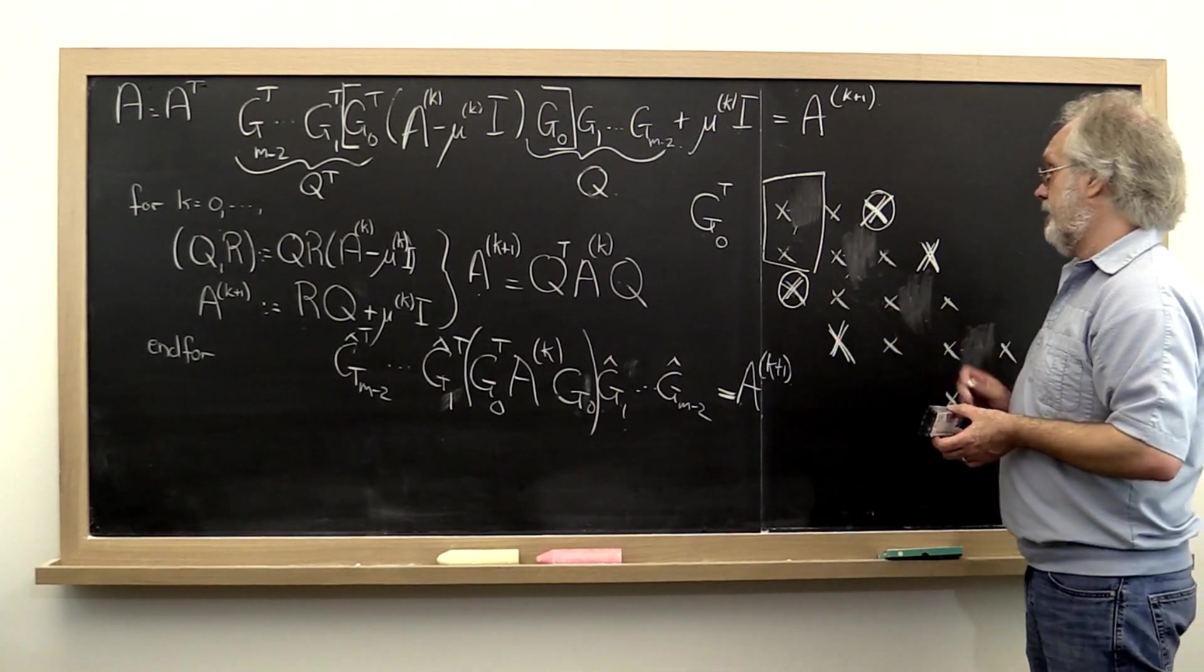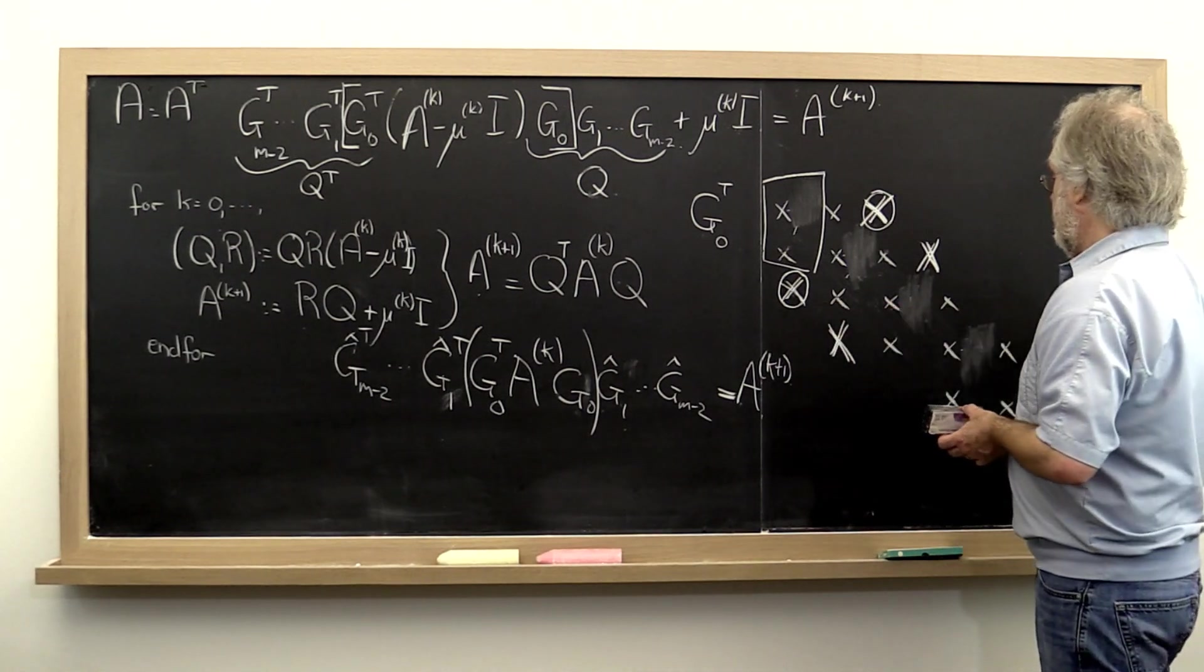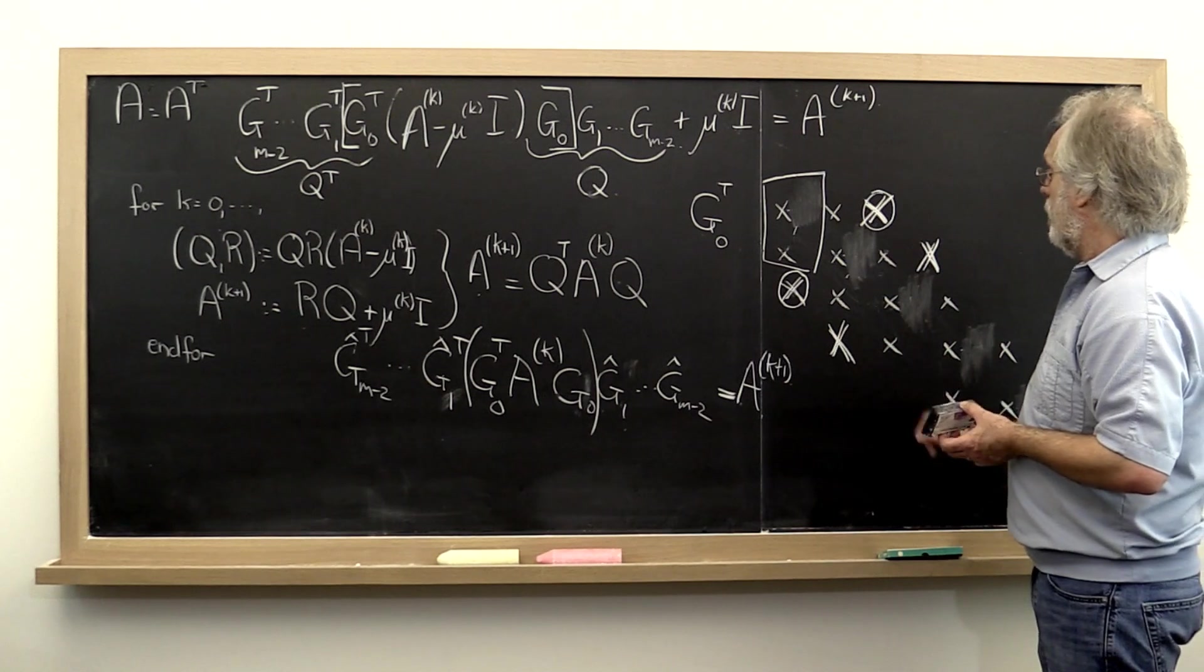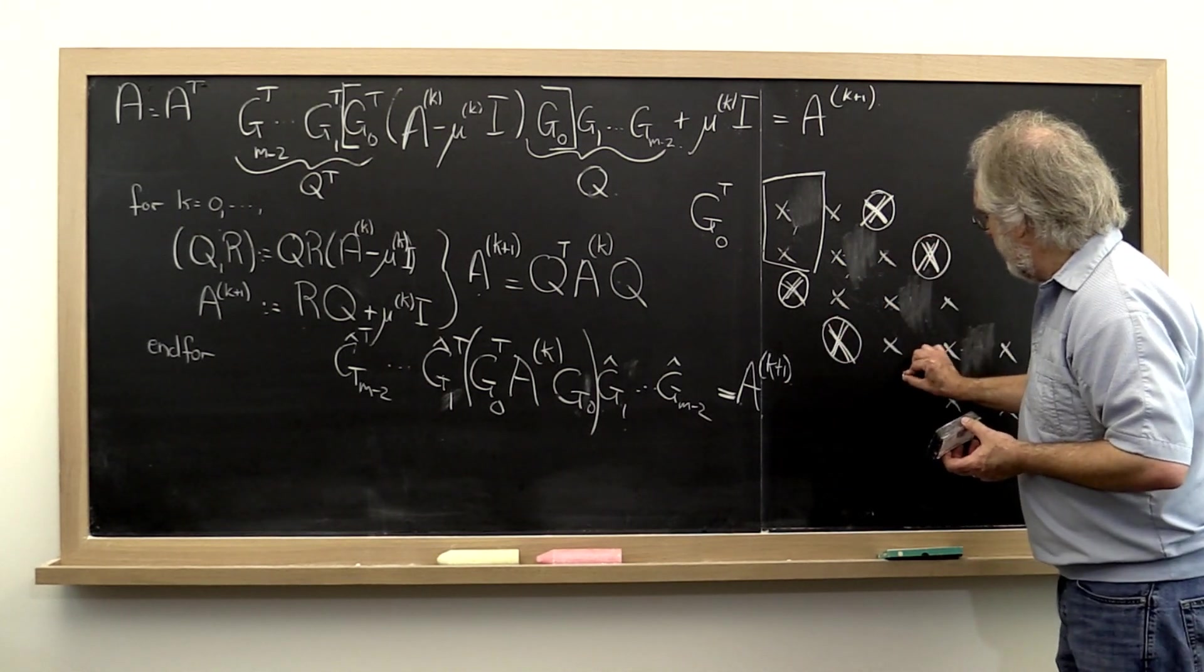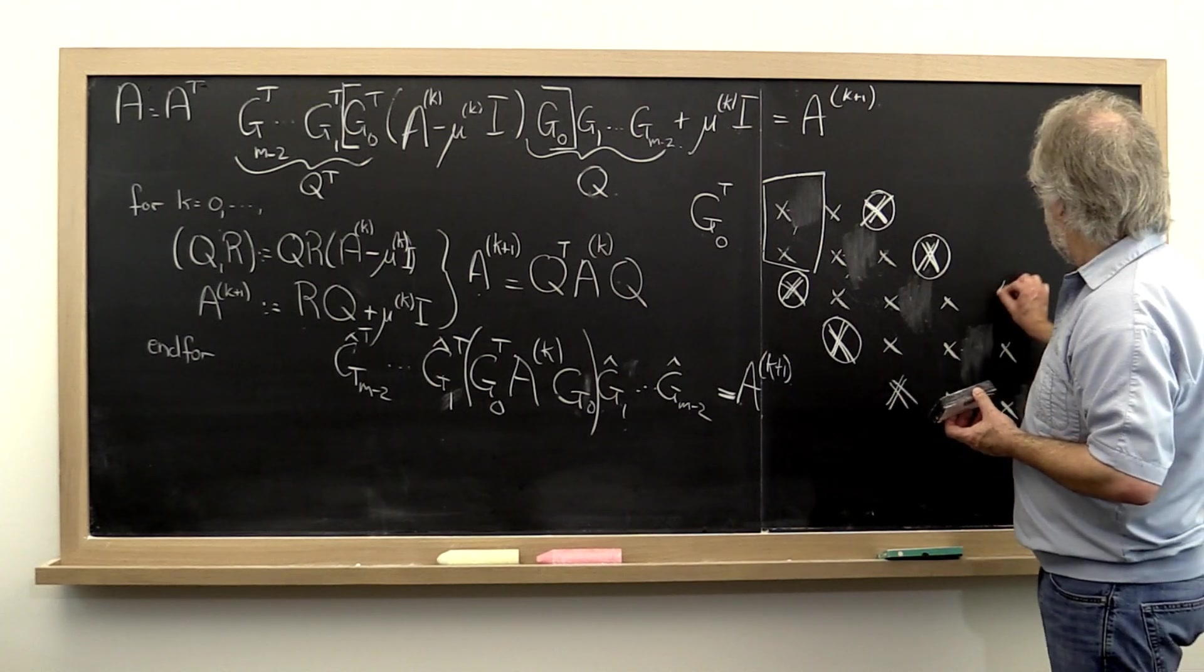Then we compute another Givens rotation to affect these two rows and these two columns, creating a zero here and here, and creating fill-in right there and right there.